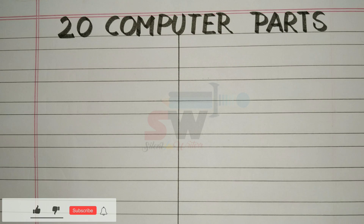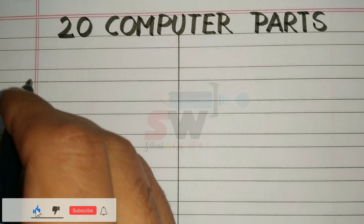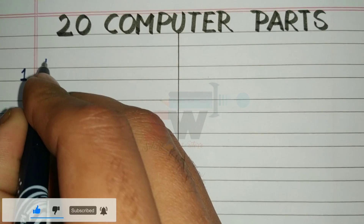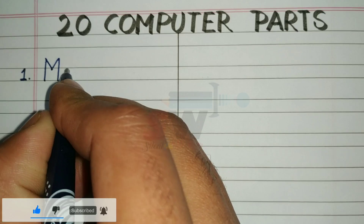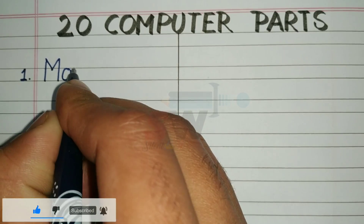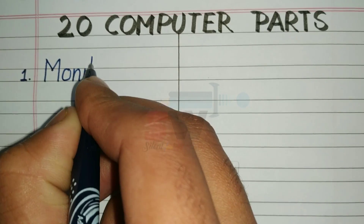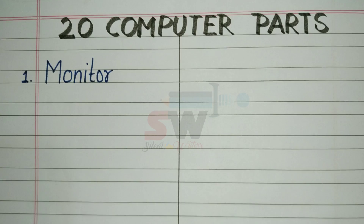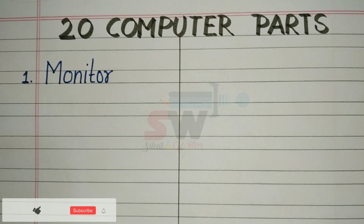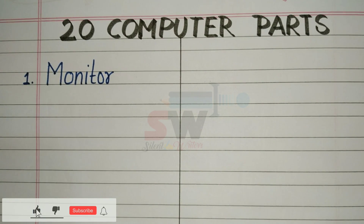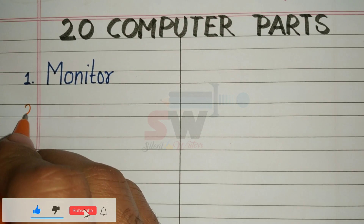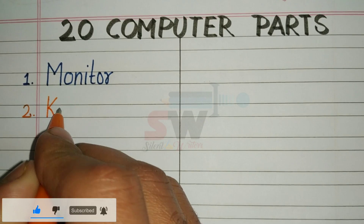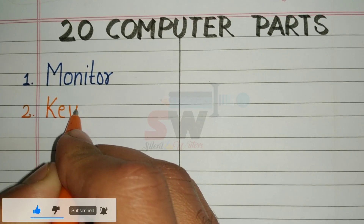20 computer parts. First: monitor. Second: keyboard.